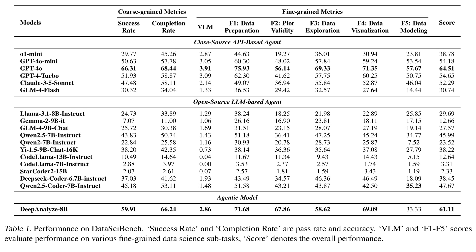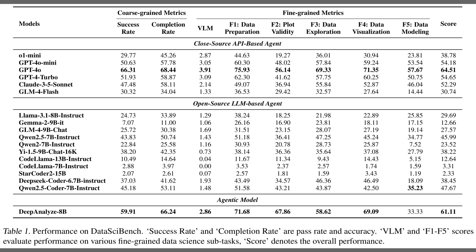Table 1 reports head-to-head results on DataSciBench, an end-to-end pipeline benchmark. The main takeaway is that DeepAnalyze 8B leads open-source agents and trails only one proprietary system overall. Success rate means pass rate, and completion rate means task accuracy, while F1 to F5 score preparation through modeling. The bottom row shows a score near 61, with particularly strong plot validity and visualization, which signals consistent, multi-stage competence.